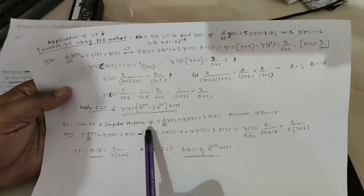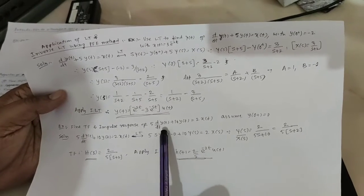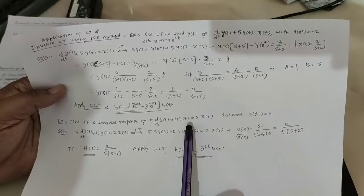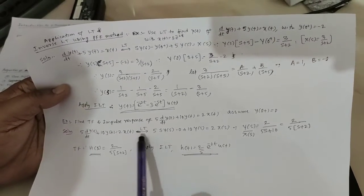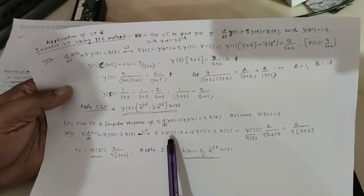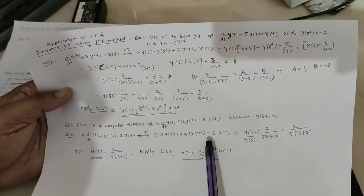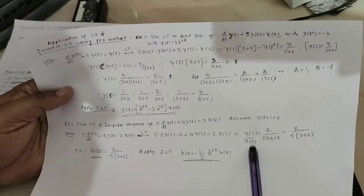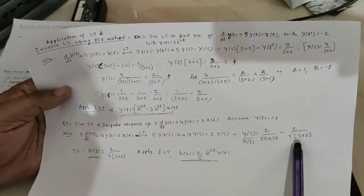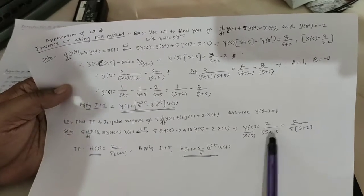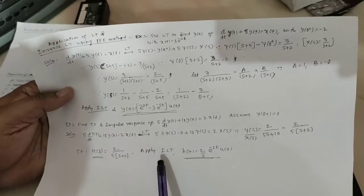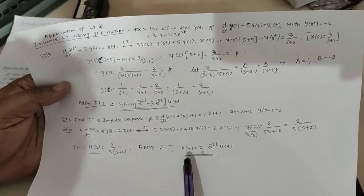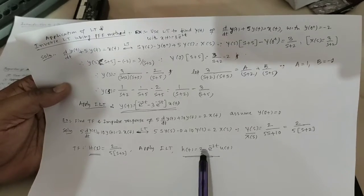Next, find the transfer function and impulse response of the differential equation: 5 d by dt of y of t plus 10 y of t is equal to 2x of t, assuming initial value equal to 0. Applying Laplace transform gives 5s Y of s plus 10 Y of s equal to 2X of s, so Y of s by X of s is equal to 2 by 5s plus 2. This is the transfer function. The impulse response is 2 by 5 e raised to minus 2t, u of t.